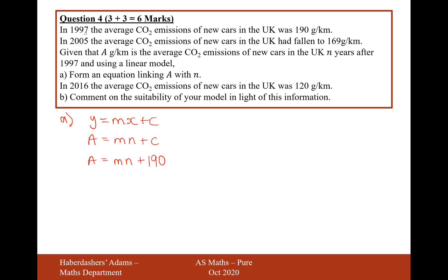The next thing I need to work out is after how many years. It would be 8 years after 1997 that the emissions were 169. So I'm now going to plug in a equals 169 and n equals 8. It's going to be m times n, which is 8, plus 190.